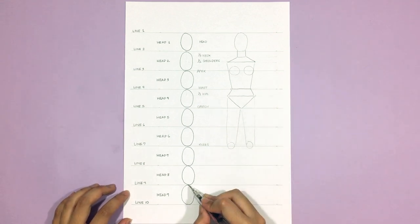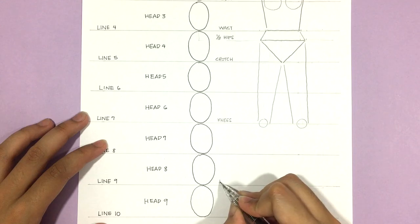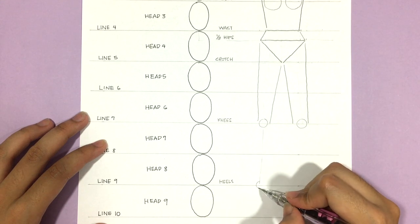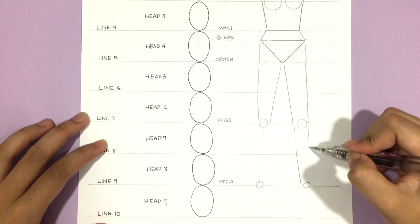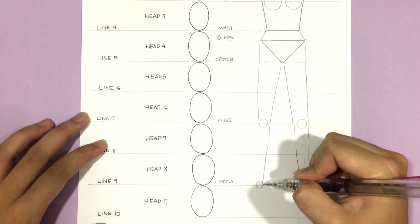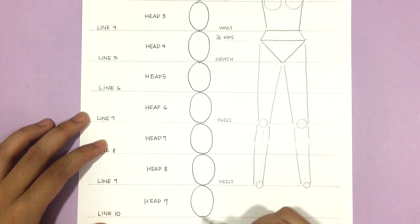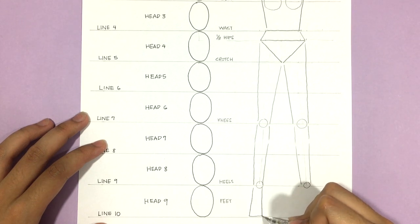And down to the top of head nine are for the ankles slash heels. And because this is a fashion figure, models usually wear heels, therefore the entire feet would occupy head nine.